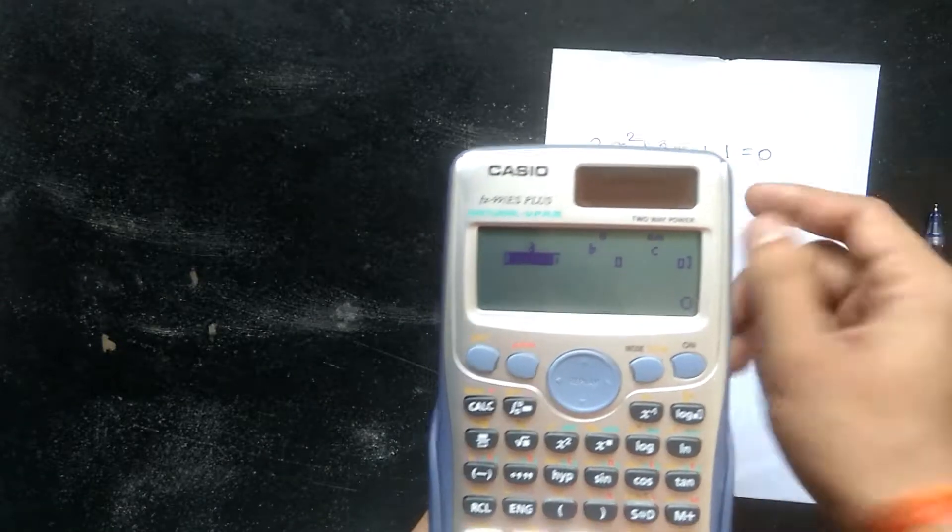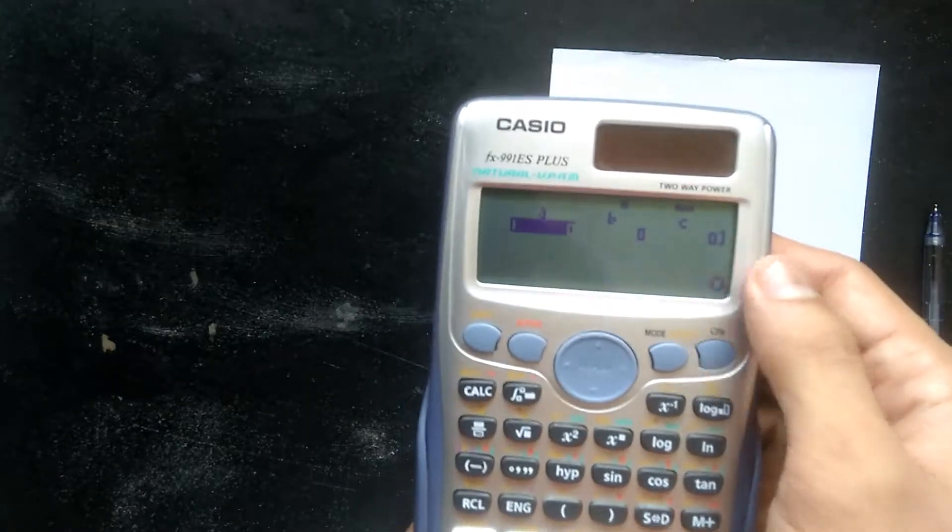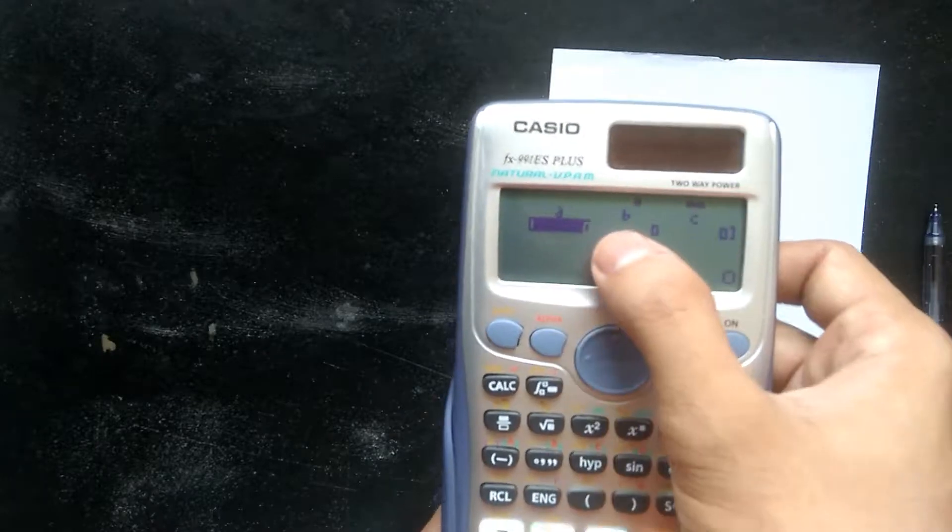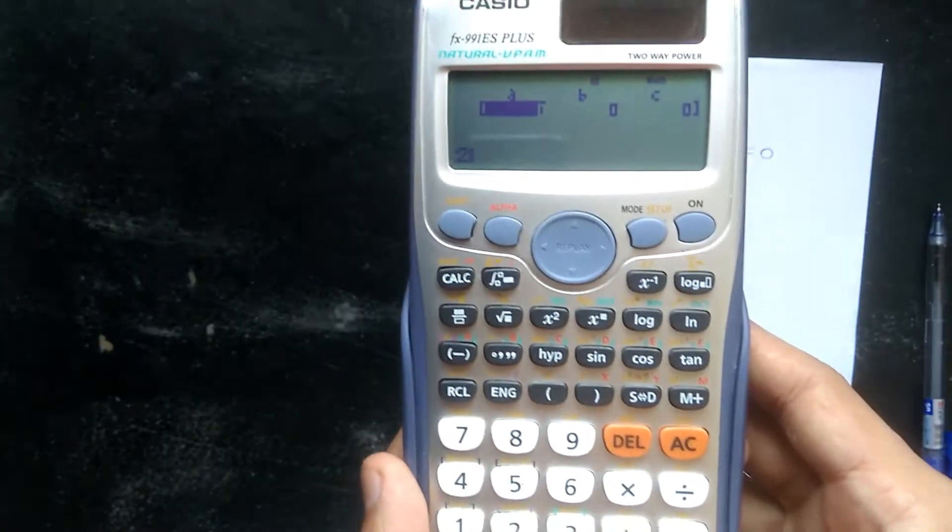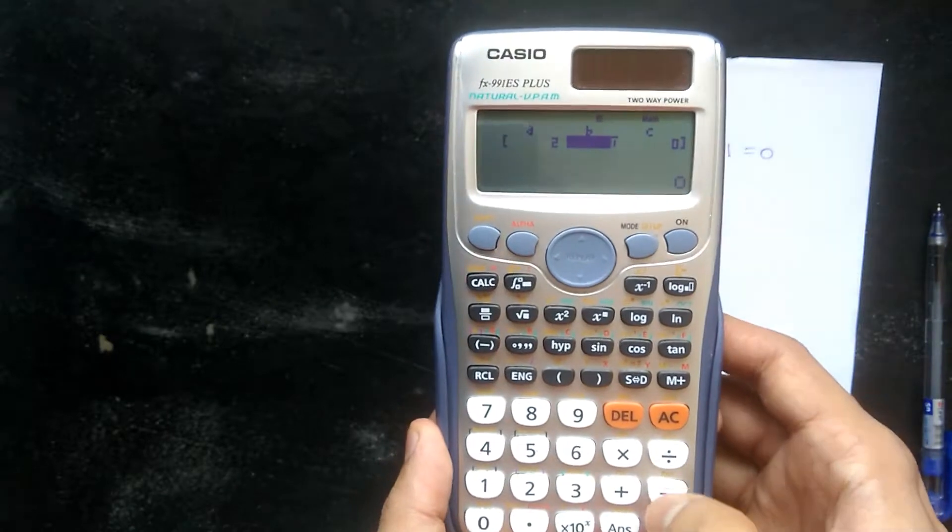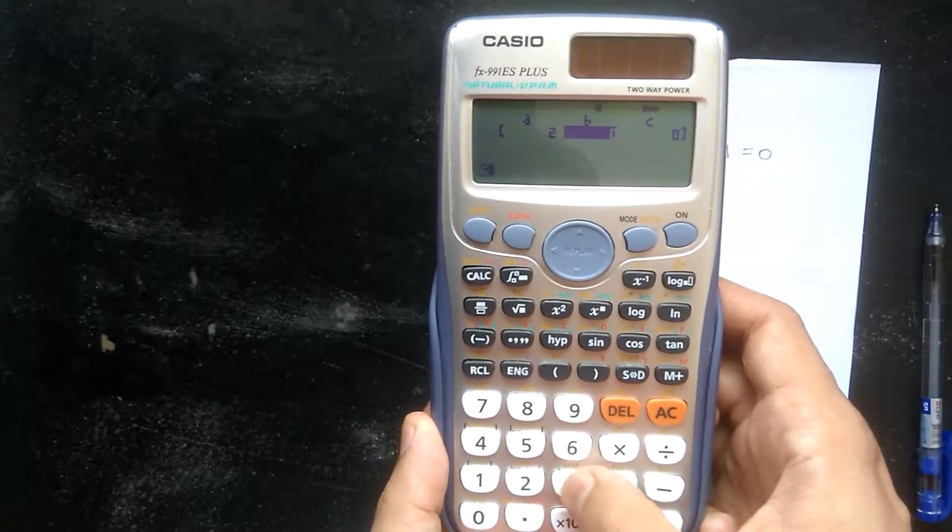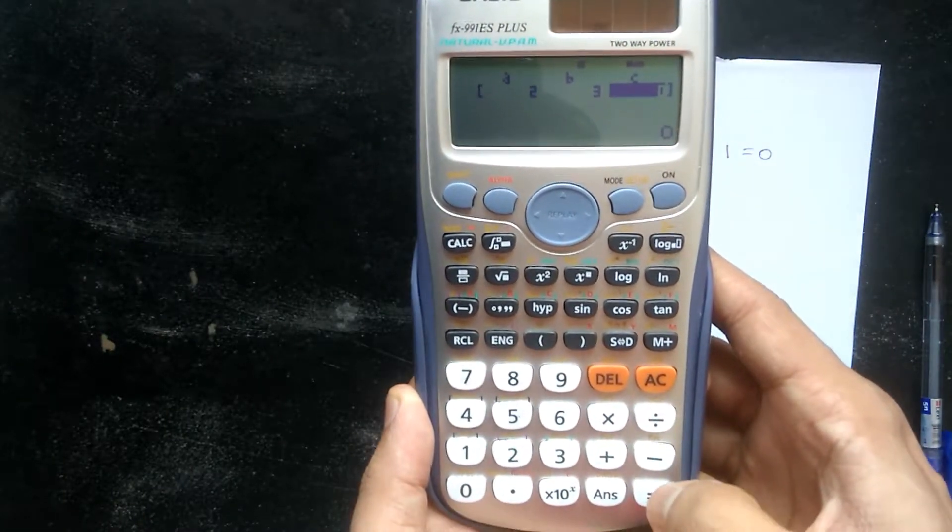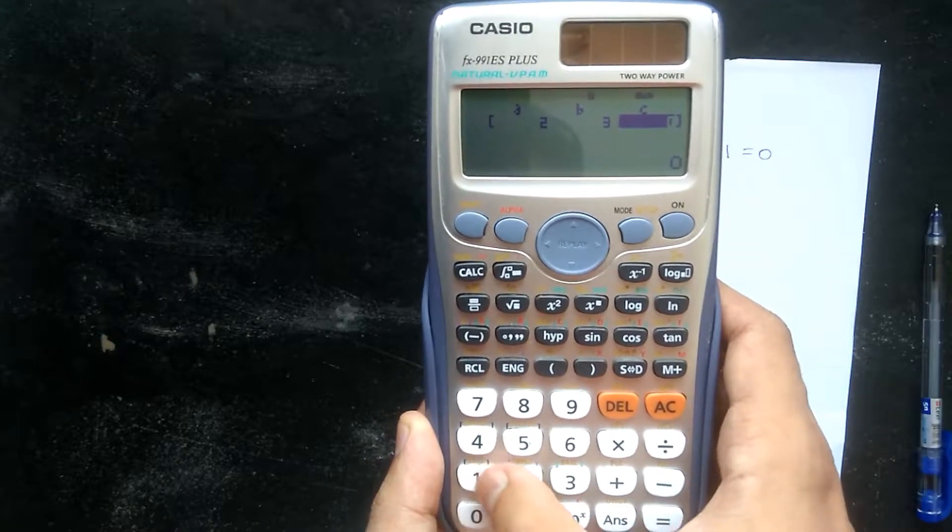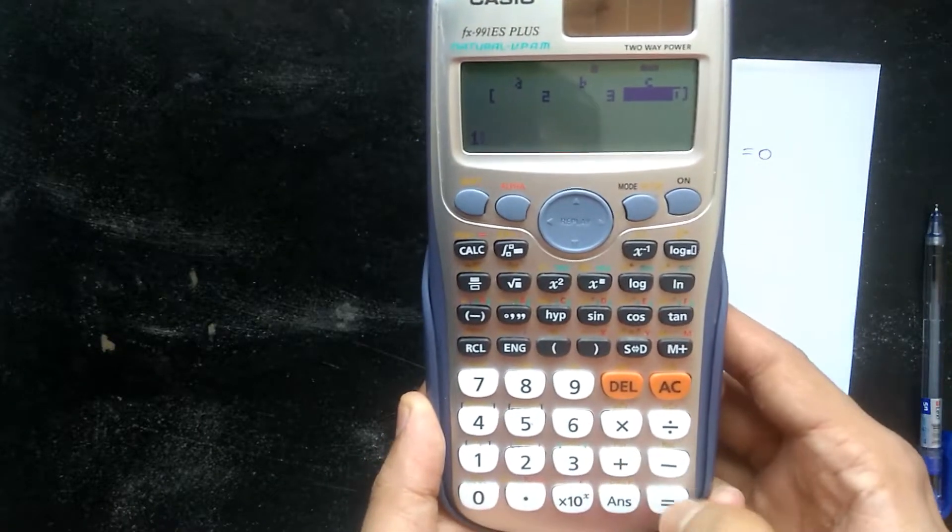A value is 2, so enter 2 and press OK. Then b value is 3, so enter 3 and press OK. Then c value is 1, so enter 1 and press equal to. Press equal to again to get the answer.